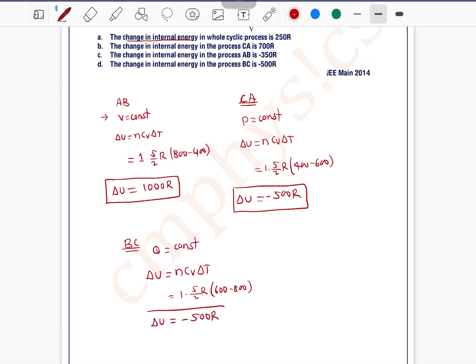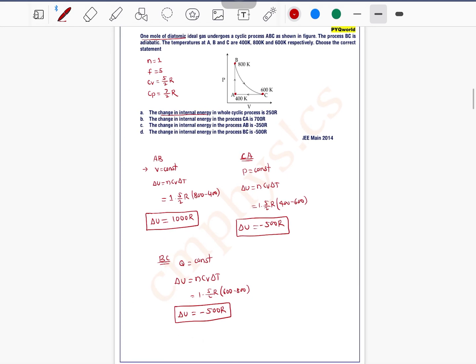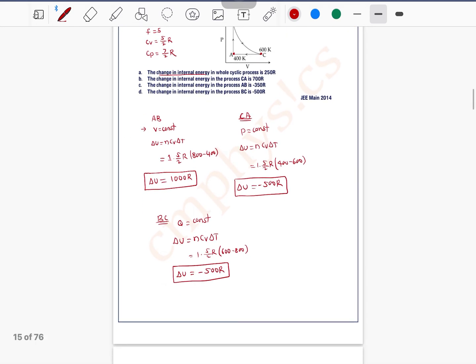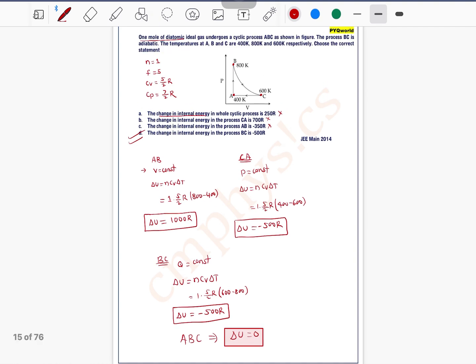Now option A: the change in internal energy in whole cyclic process. For ABC as a cyclic process, we can write delta U equals 0. So option A is incorrect. The change in internal energy in process CA is 700 R - incorrect. Change in internal energy in process AB is minus 350 R - incorrect. The change in internal energy in process BC is minus 500 R - this is the correct one. So option D is the correct one.